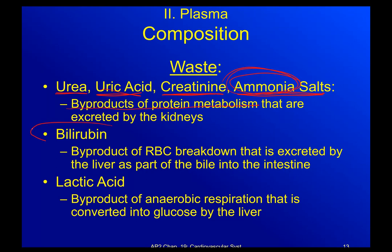Bilirubin is another waste product. When we recycle red blood cells, we break them down, and one waste product of that process is bilirubin. Bilirubin is excreted by the liver — it becomes part of the bile that is then secreted into the intestine to help digest fats. Bilirubin is also a pigment, and it's actually one of the things that makes your feces brown.